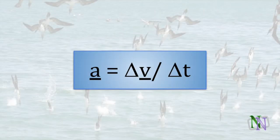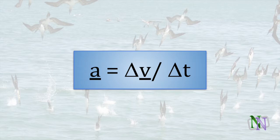Here is the formula. Acceleration, shown as a vector, is the change in the velocity vector divided by the time taken. If the acceleration is changing over time, then this formula gives us its average.